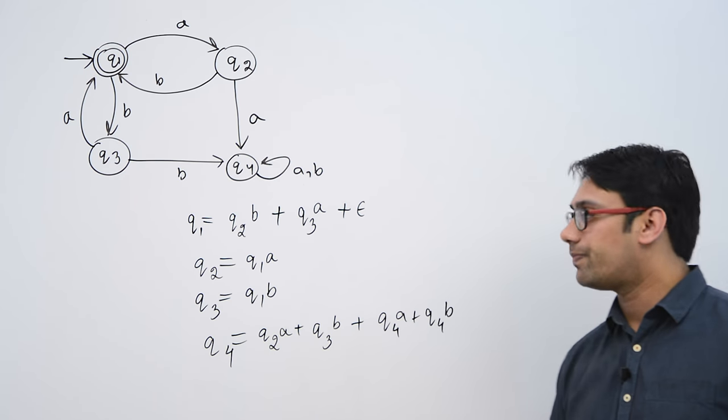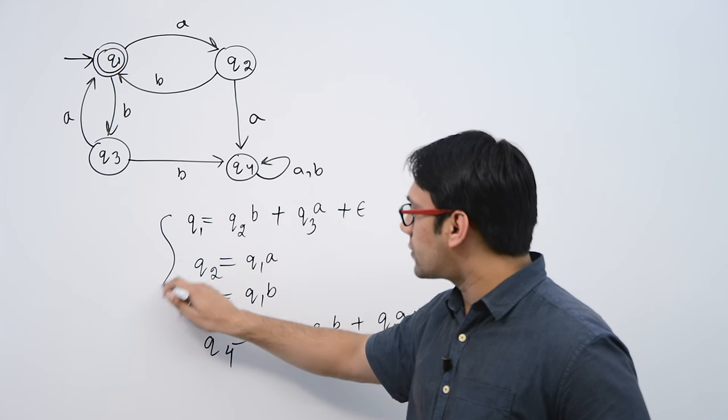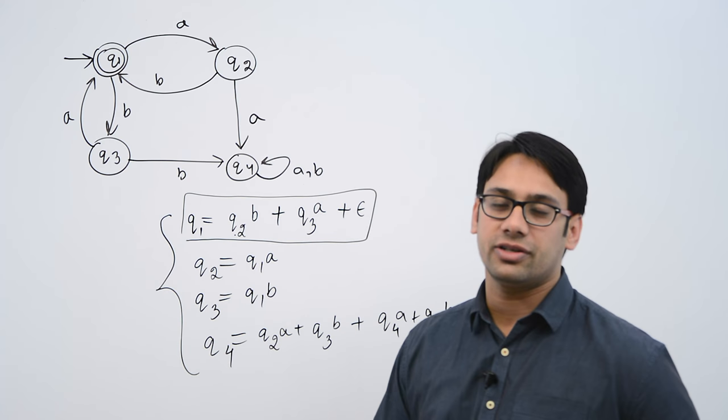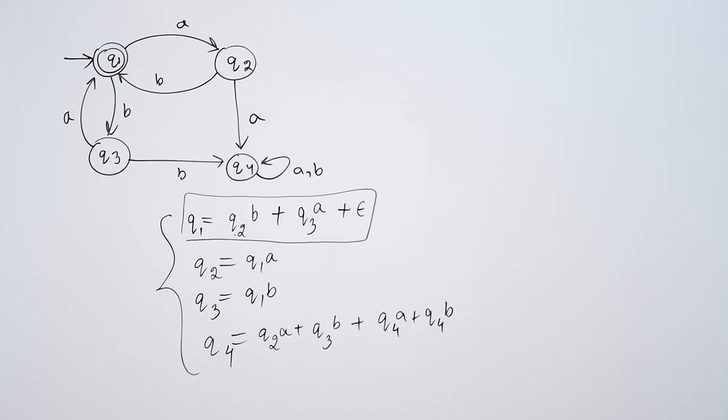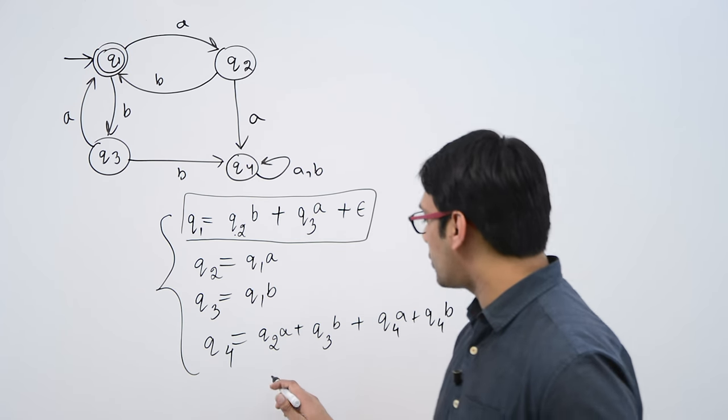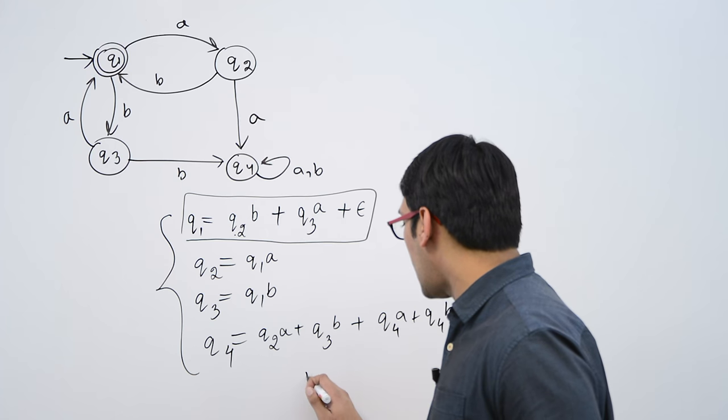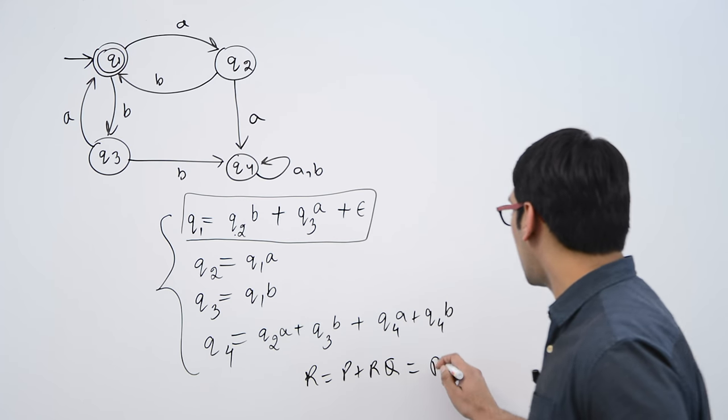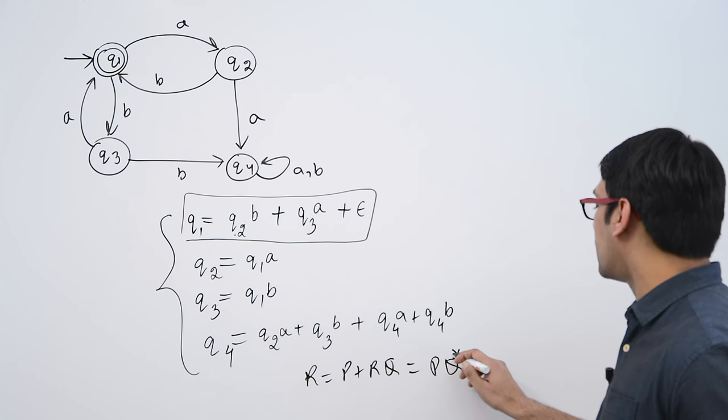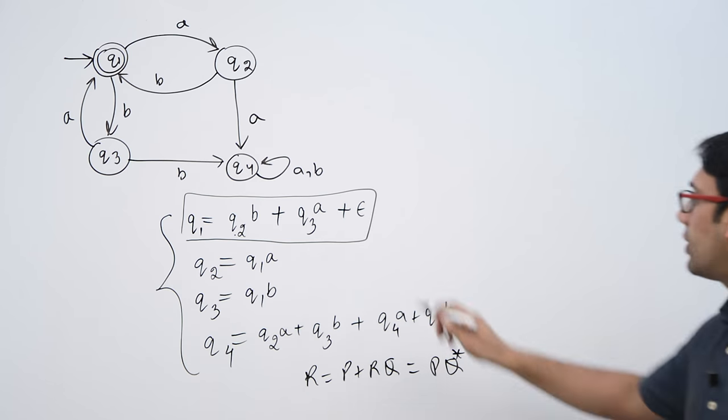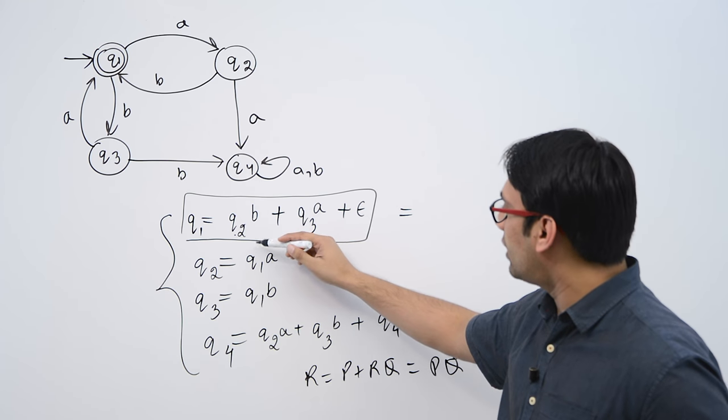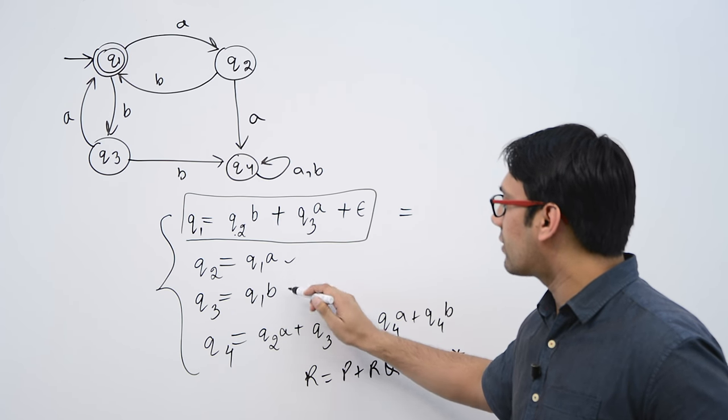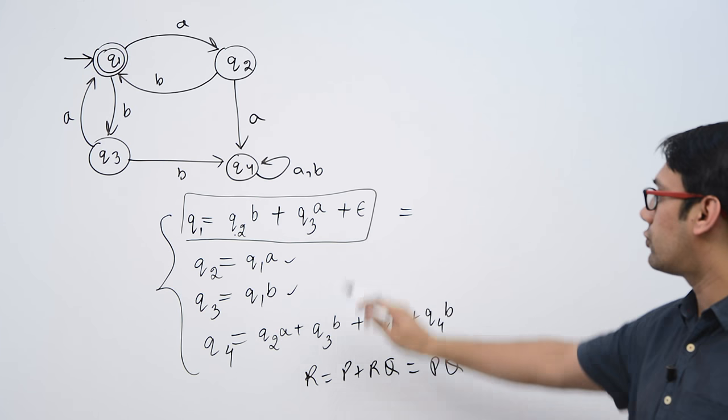q1 is the only final state. So here in all these expressions if we can solve this expression by removing these q2 and q3 by the appropriate symbols then we can get a regular expression. And we are going to extensively use the theorem which is r is equal to p plus rq, which can be written as pq star, which is the Arden's method. Now for example here we have q2 and q3. You can replace q2 and q3 by their exact values here because we have 4 expressions and we have to solve this expression.